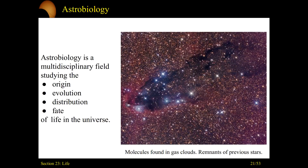Now that we have a better idea of what we mean by life, let's talk about trying to find it and better understand it. Part of that falls under the topic of astrobiology. This is a huge field. If you try to be an astrobiologist, you're talking about learning a large range of disciplines — not just being an astronomer, but being a biologist, a chemist, a physicist. It's a large multidisciplinary field of study, requiring work with a wide range of experts.